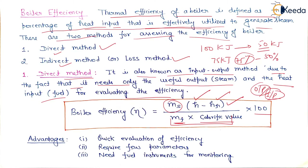The direct method has some advantages: quick evaluation of efficiency, requires only a few parameters — mass of steam, mass of fuel, enthalpy at inlet and outlet, and calorific value — and needs only a few instruments for monitoring.